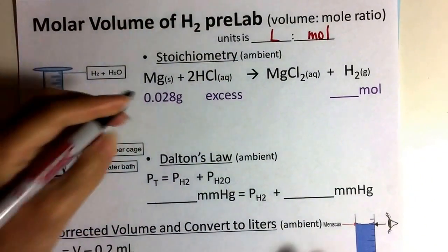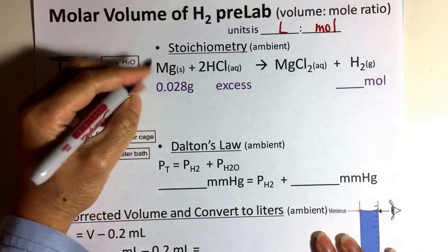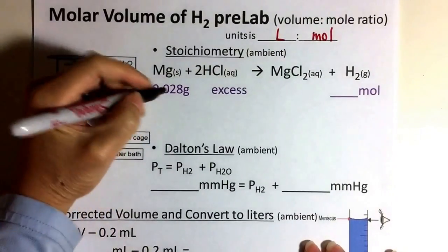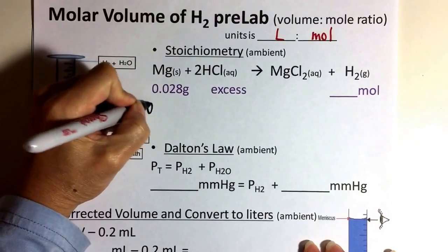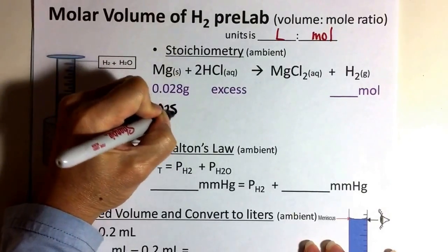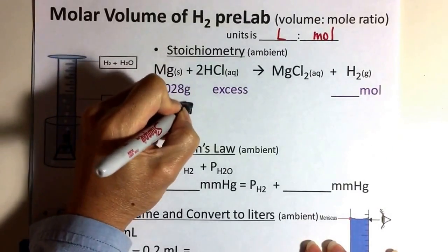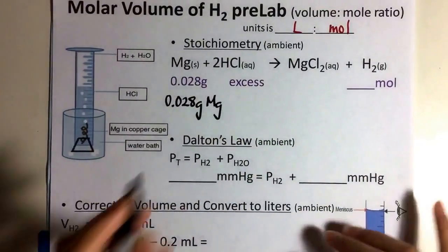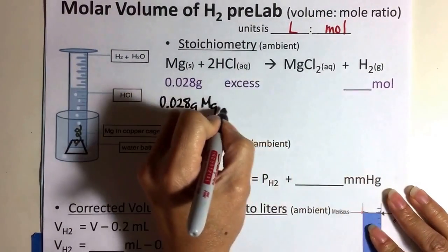We start off with magnesium, and it's given to us in the pre-lab question, make sure you read that setup first, that you have 0.028 grams of magnesium. And it says that there's an excess amount of hydrochloric acid. You're going to try to get to moles of hydrogen.